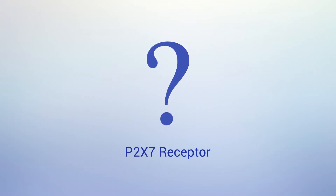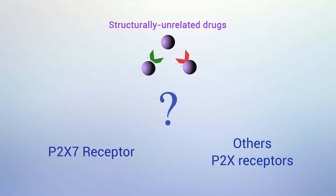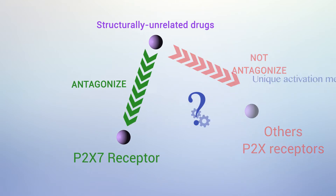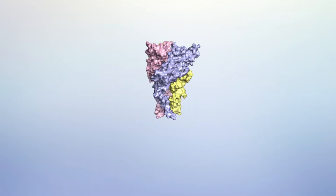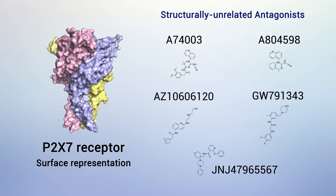Many questions continue to exist regarding this enigmatic receptor. How do structurally unrelated drugs antagonize only the P2X7 receptor but not the other P2X subtypes? Do they target an activation mechanism unique to the P2X7 subtype? To answer these questions, we determined the first crystal structures of a mammalian P2X7 receptor with and without five structurally unrelated antagonists.